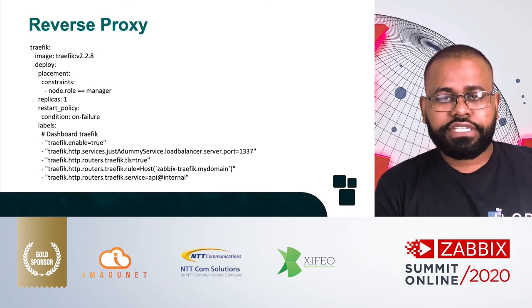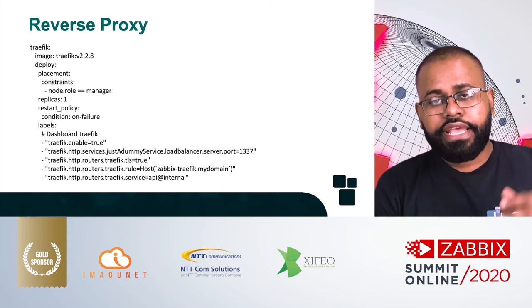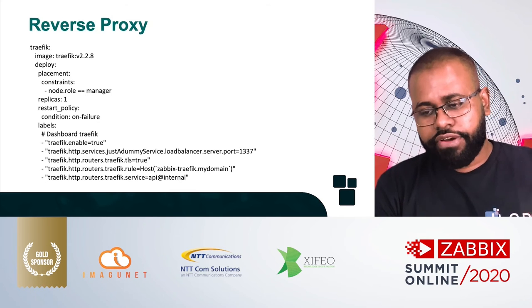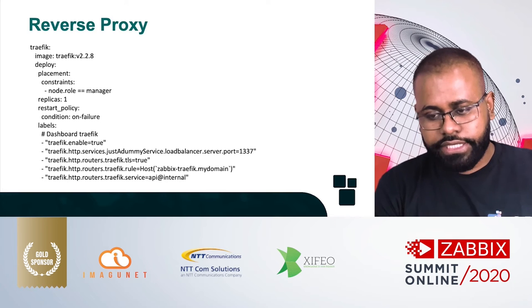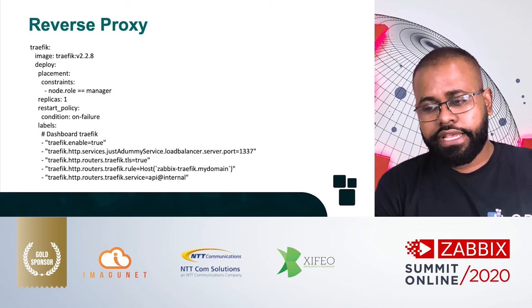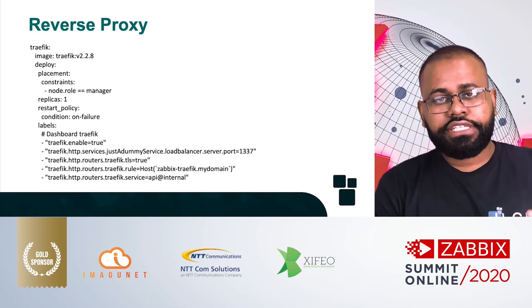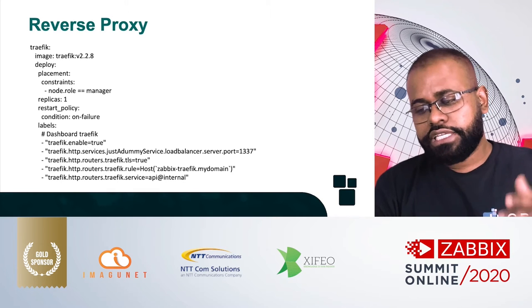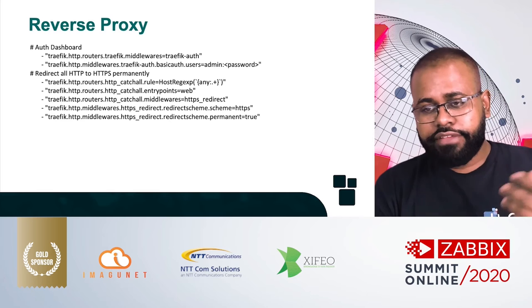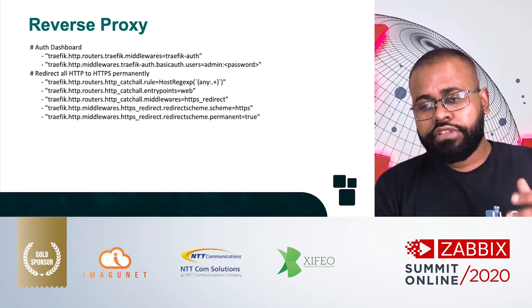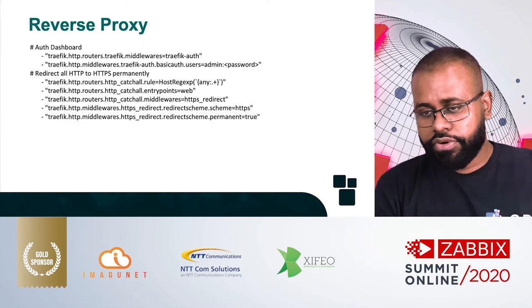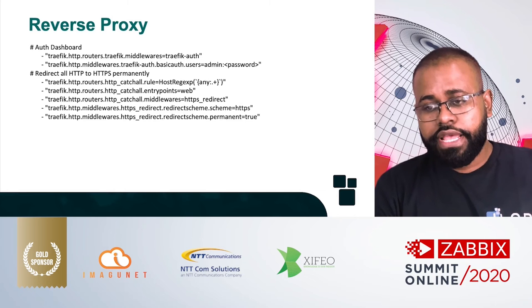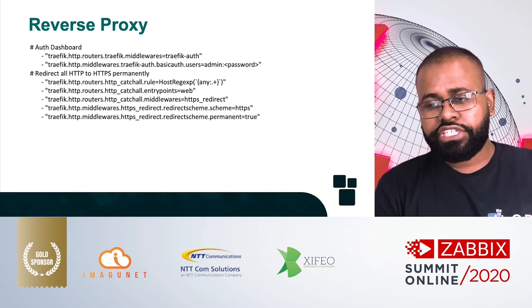In labels, we define labels specific to Traefik. For example, define that Traefik is enabled, define the load balancer, define entrypoints, and define a router host. This host is the name you use to access this service. For example, to access Traefik dashboard, you would use zabbix-traffic.my.com. Here we can also configure authentication for dashboards with Traefik and define how to redirect all HTTP connections to HTTPS.